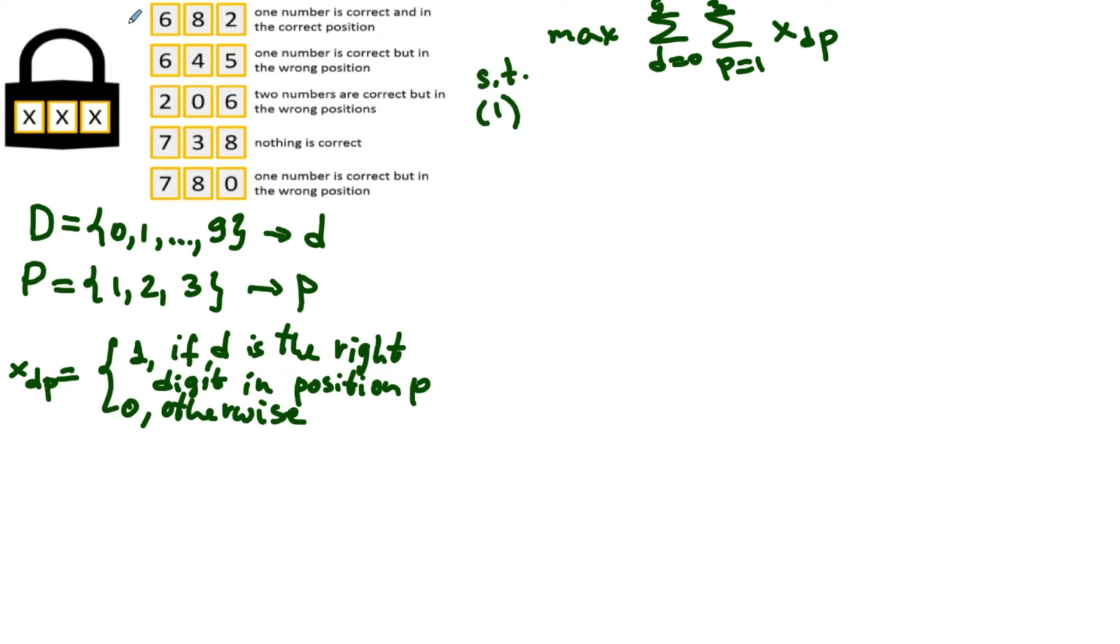The first condition says that only one number is correct in the correct position in the first row. This means that x six one plus x eight two plus x two three equals one. Looks like the second constraint is going to be messy. Not as messy as my hair during the quarantine, but you are right, it will not look as pretty as the first one. Let's write it down anyway.